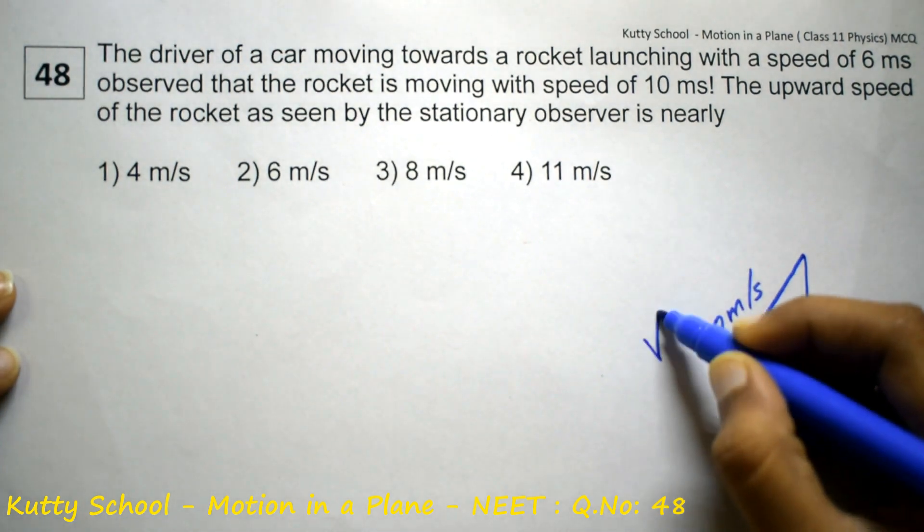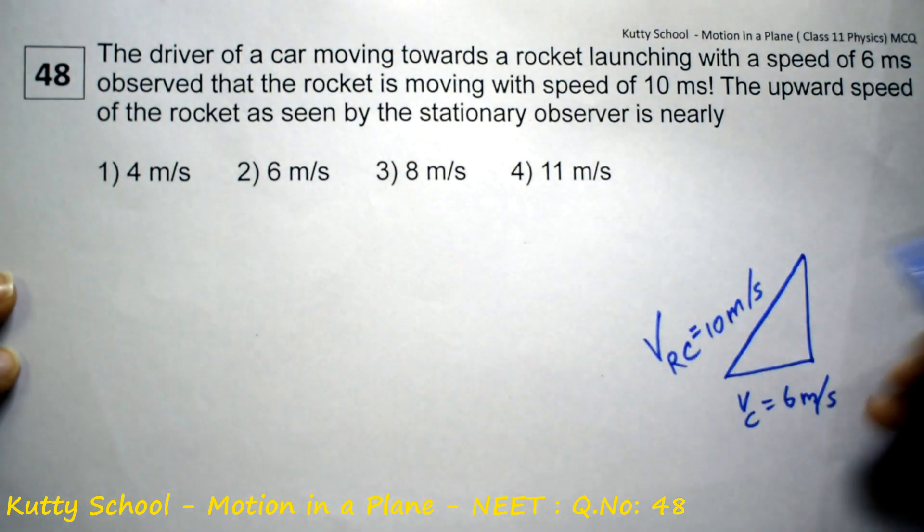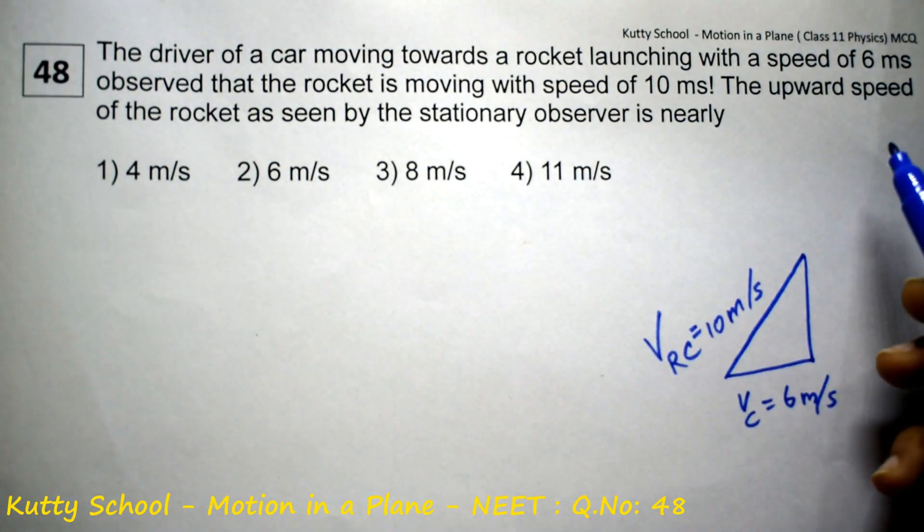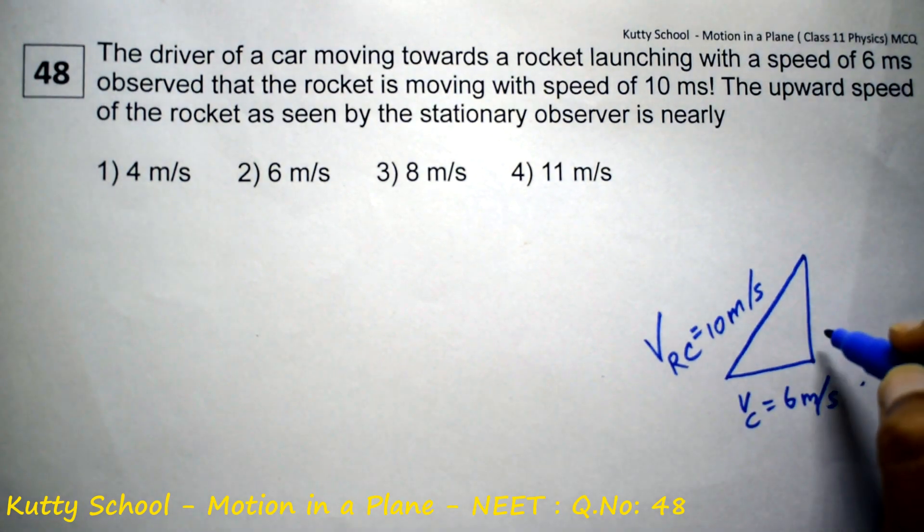This is the velocity of the rocket with respect to car. The upward speed of the rocket is seen by a stationary observer. Stationary observer - the rocket is moving with a speed of 10 meters per second.